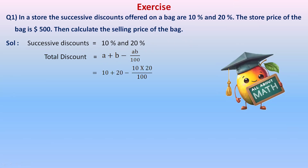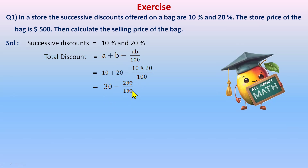Let's put in the values. In place of a we write 10, in place of b we write 20. ab means a multiplied by b, that is 10 multiplied by 20. First we do the multiplication, then addition: 20 plus 10 is 30, minus 200 by 100. Cancel the zeros — 200 by 100 gives 2. So it's 30 minus 2, that is 28 percent. The total discount is 28 percent.